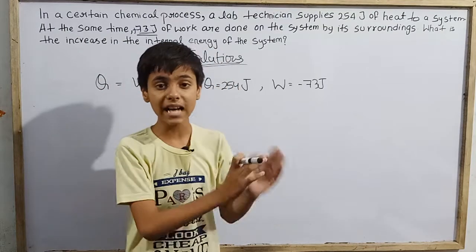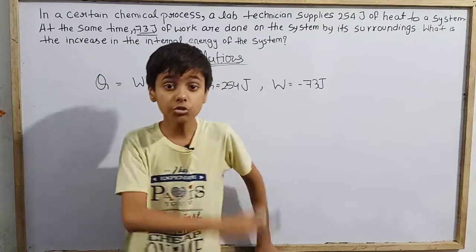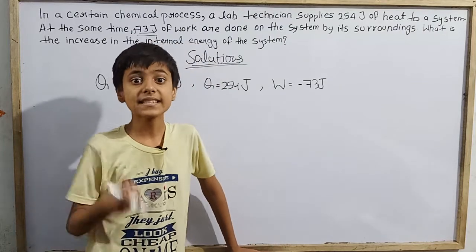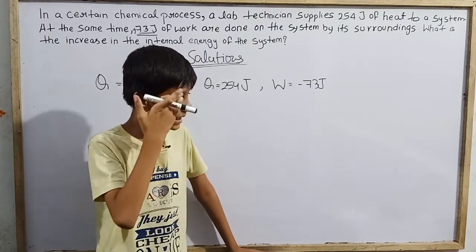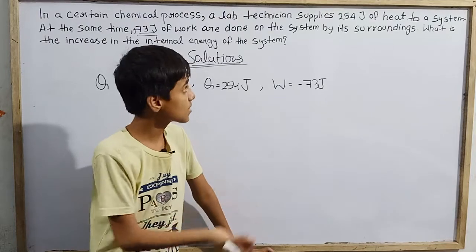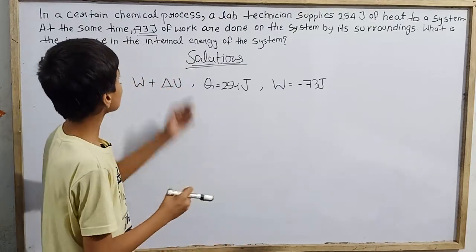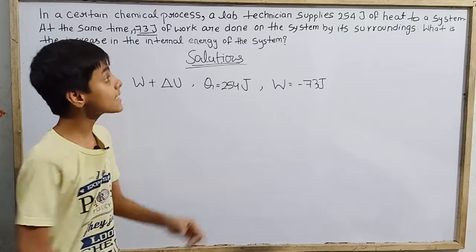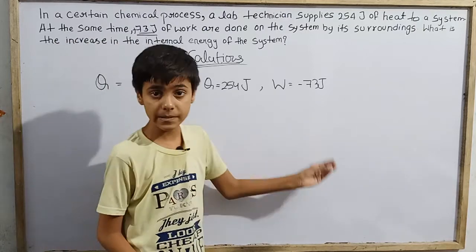The surroundings have done work on the system of 73 joules. We need to consider the direction of work: is the work done by the system on the surroundings, or on the system by the surroundings? We need to account for this properly.